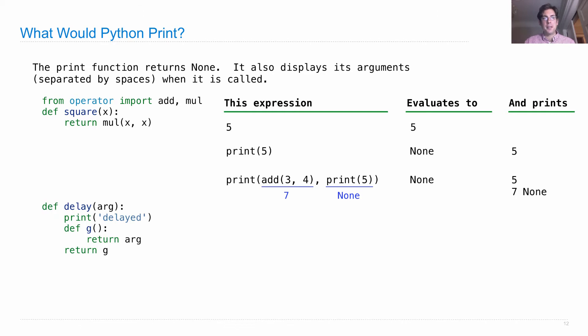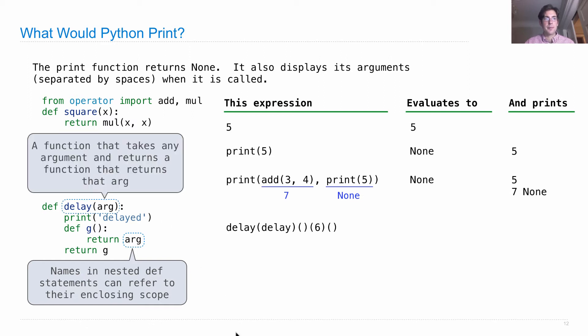Let's do another one. Assume that I also typed in the following definition: delay(arg) prints delayed, then defines a function g that takes no arguments and returns arg, and that g is returned. And then we try to evaluate the following call expression. First, we need to understand what delay does. So we have a name arg, which is not a formal parameter of g but is a formal parameter of the enclosing function delay. Names in nested def statements can refer to their enclosing scope.